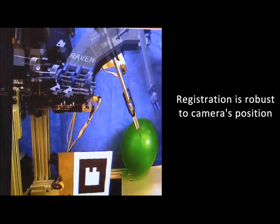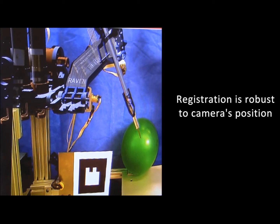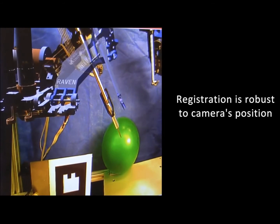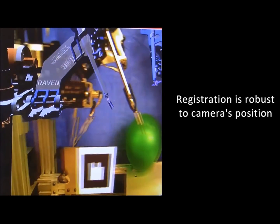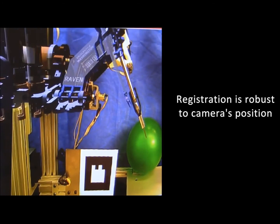Here we see registration of the visualization of the robot on the RGB image. Note that this registration is robust to camera position. This is demonstrated by moving the camera.